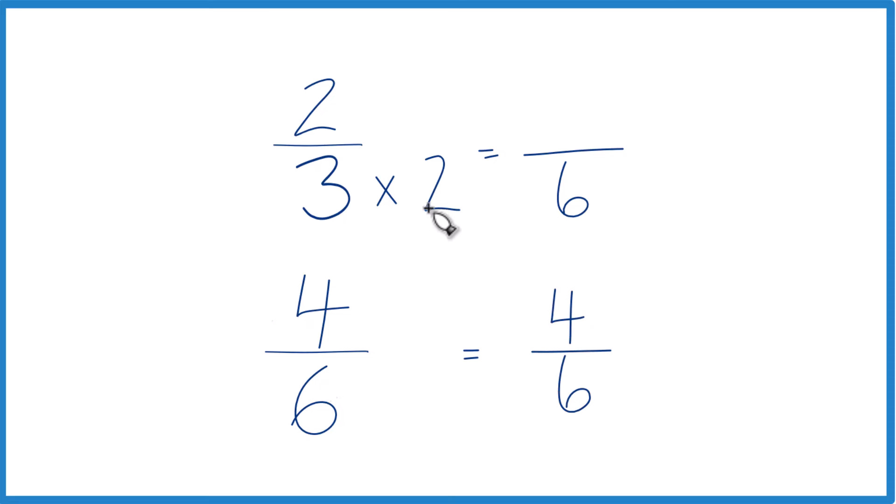Now, because we multiply the denominator by 2, we do have to multiply the numerator up here by 2. That's because 2 over 2 is just 1. So we're multiplying by 1, we don't change the value, just the way it's represented. 2 times 2 is 4.